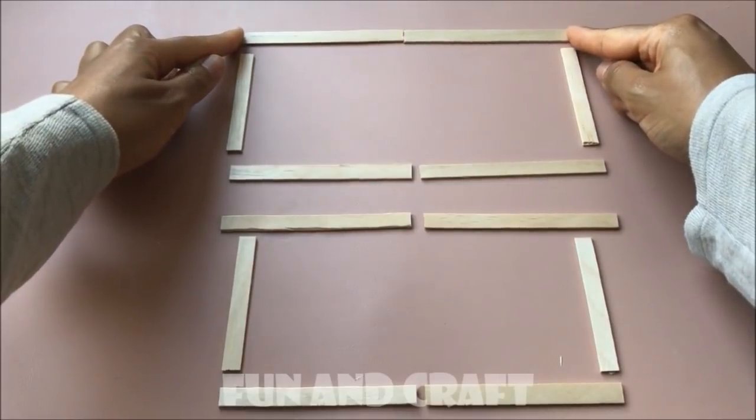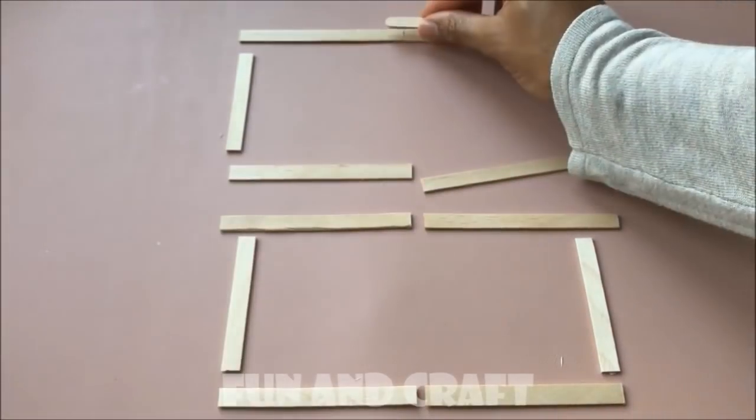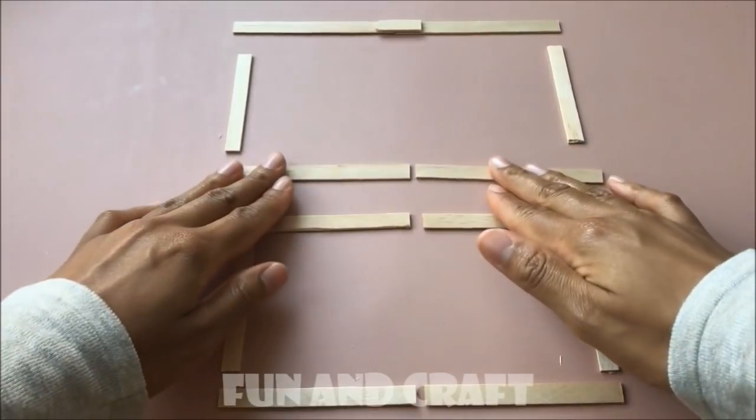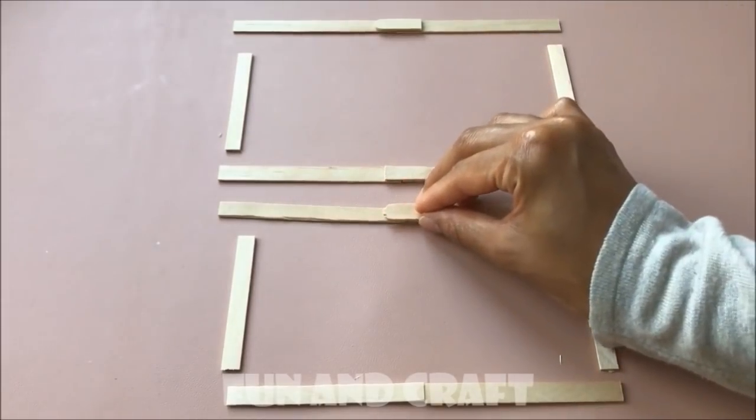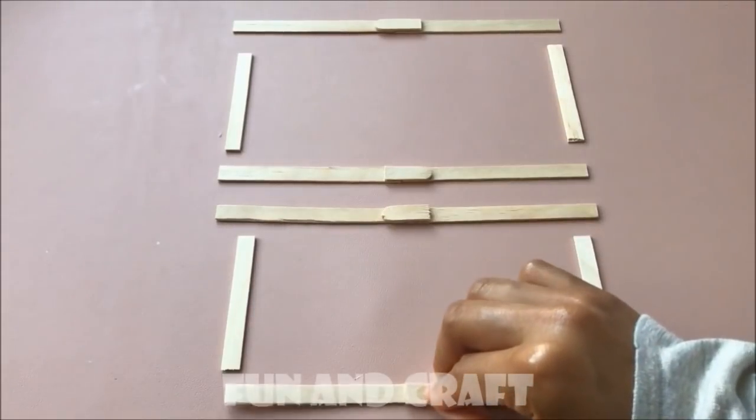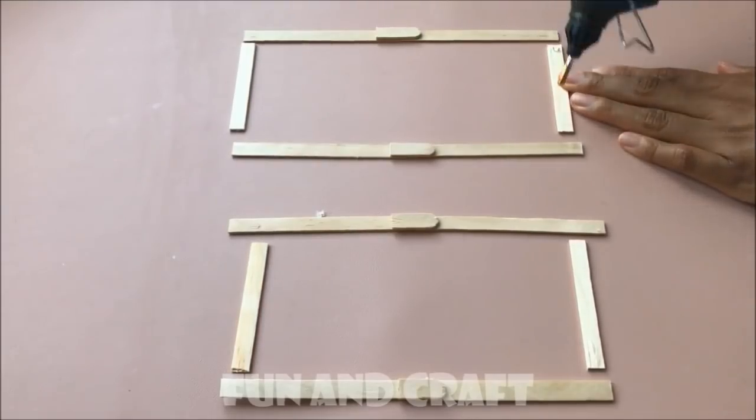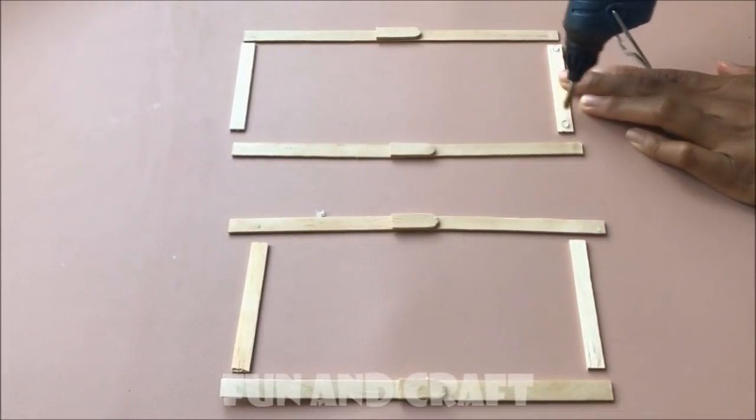Now I'm using popsicle sticks that are one centimeter wide to create the part of the convertible sofa that you can pull out. And I recommend measuring every now and then while you're crafting and adjusting the pieces as you need them instead of cutting out everything in advance.